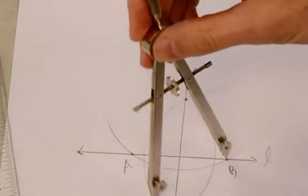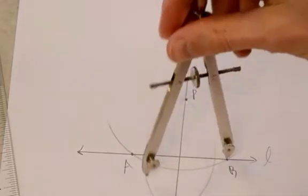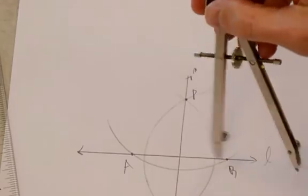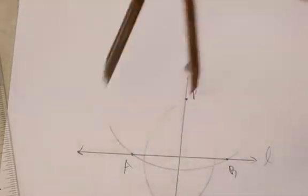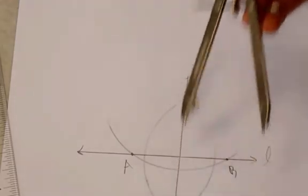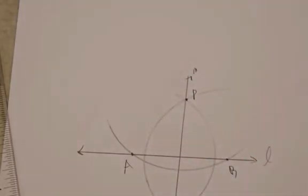And then you just go ahead and draw from each point A and B, in this case, draw your arcs. So you're making a perpendicular bisector of segment AB, which also creates a line perpendicular to line L. So there you have it. That's how you draw a line perpendicular to a given line through a point that is not on the line, which was point P.